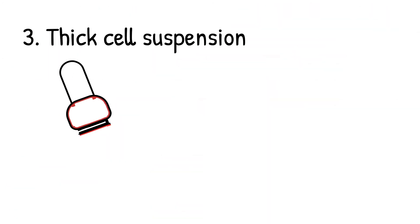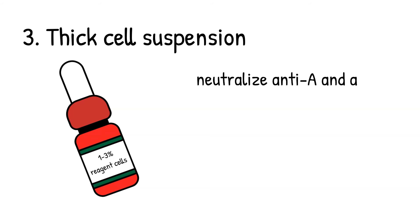We can also see this in bone marrow and stem cell transplant patients. Third, thick cell suspensions. Thick cell suspension can neutralize anti-A and anti-B typing reagents. We can solve this by making a new cell suspensions and making sure that the cell suspension is about three percent.